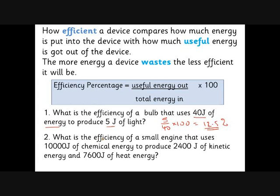What's the efficiency of a small engine that uses 10,000 joules of chemical energy to produce 2,400 joules of kinetic energy and 7,600 joules of heat? It's tempting to say all 10,000 joules came out — yes, everything in came out, but that's not the question. How much came out as what you wanted? This is an engine supposed to produce kinetic energy, so the efficiency is 2,400 over 10,000, which is 0.24 as a decimal, or 24% as a percentage.